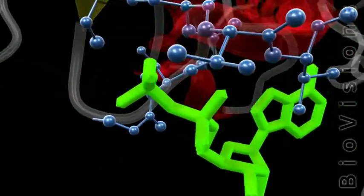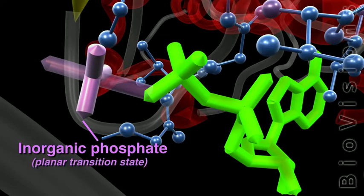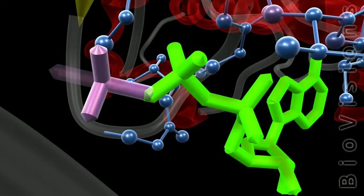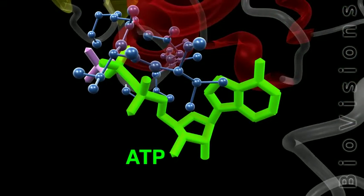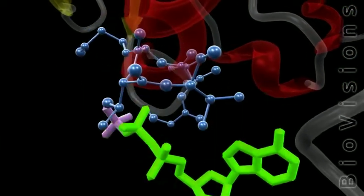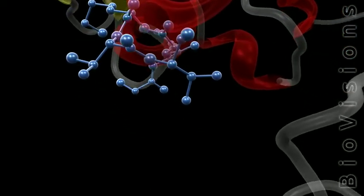Once ADP and inorganic phosphate are appropriately positioned, a planar transition state is transiently formed and then resolved to yield an ATP molecule. The subsequent conformational change of the ATPase breaks the hydrogen bonds that stabilize ATP, leading to its dissociation from the active site.